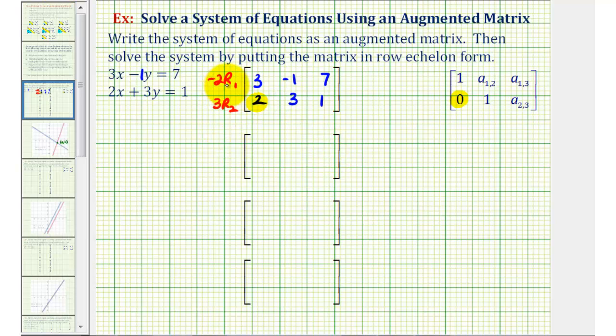So the new row one is going to be negative six, positive two, and negative fourteen. The new second row would be six, nine, and three.